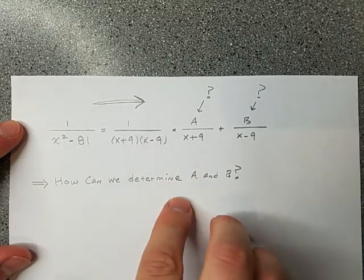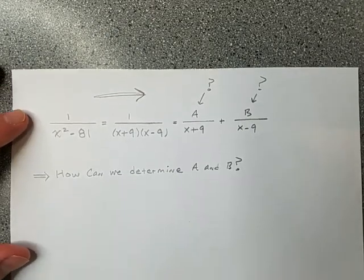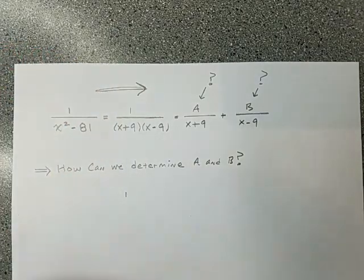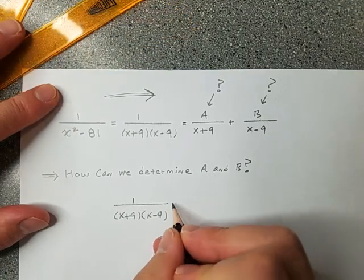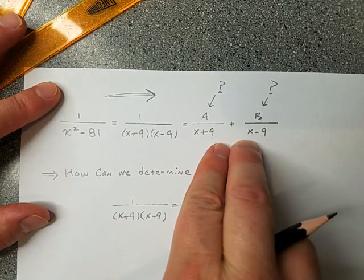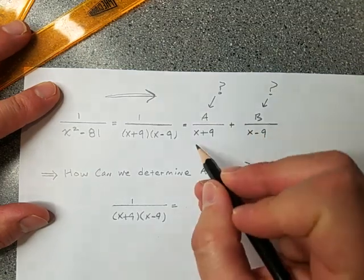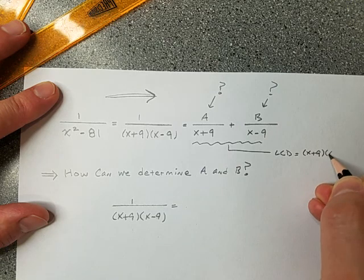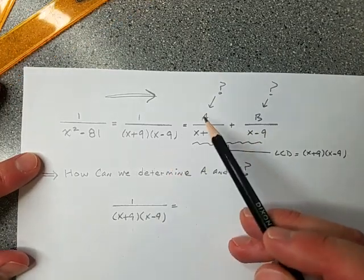So the big question is: what are A and B? What should those numbers be for this to work out? To find them, I'll add the fractions together with a common denominator of x plus 9 times x minus 9, and force the result to be equal to the original. That's how I'll solve for A and B.